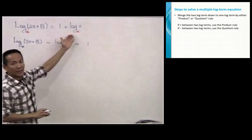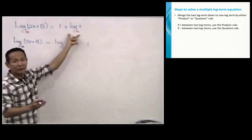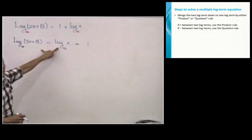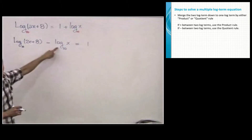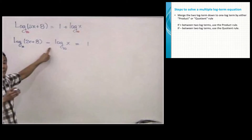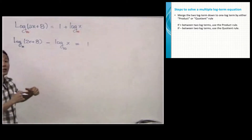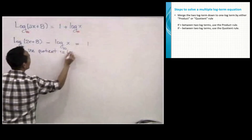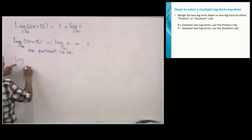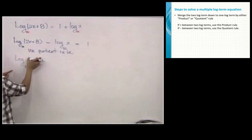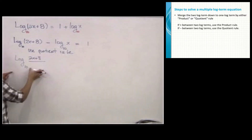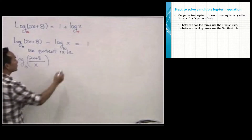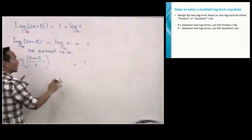To simplify, we move log x from the right side to the left side of the equation. Now merge: I have two log terms, and I look at the sign between them — it is a subtraction. As mentioned, subtraction means we merge by the quotient rule. So I have log base 10 of (2x + 8) over x equals 1, where (2x + 8) is the numerator and x is the denominator.